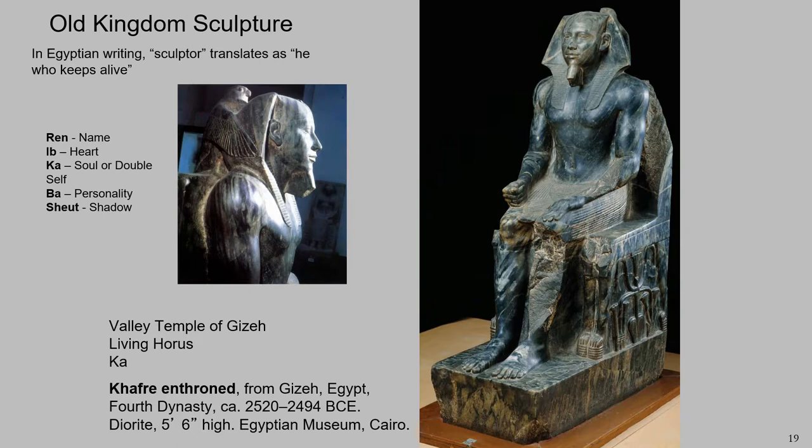You'll notice that the sculpture is very tight. There is no negative space — there are no empty spaces. There's a practical purpose for this: it would have been easier to carve and it would have wasted less material. However, the primary reason is to protect the integrity of the sculpture.